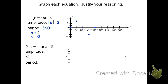I usually do two cycles, so I'll repeat: center, max, center, min, center — that would be two cycles, or two periods, of our sine graph. Then we draw the curve.